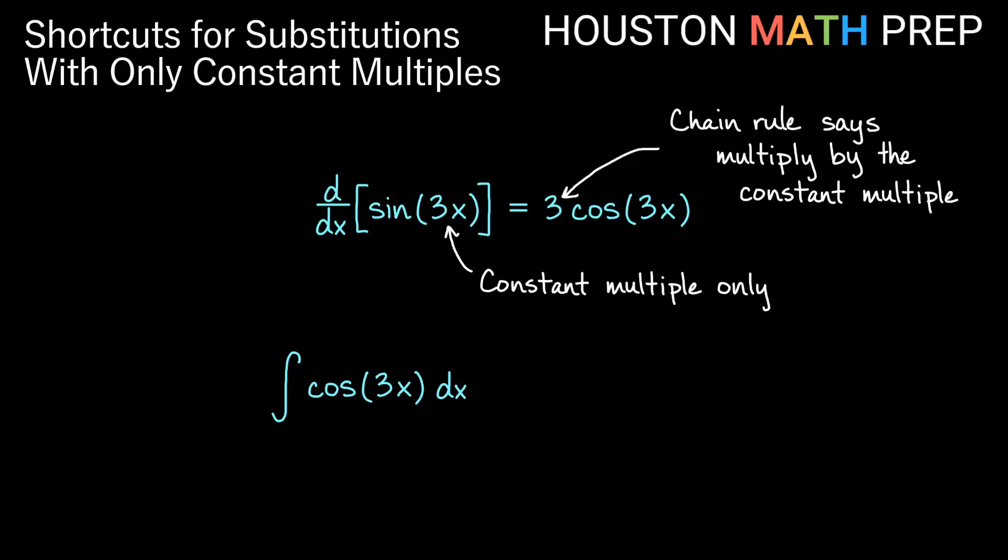With antiderivatives, I take the antiderivative of cosine x which is sine of 3x. We definitely get plus a constant. But the reciprocal of the constant multiple inside is going to come out.